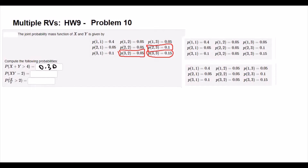The last part is asking probability that x divided by y equals 2. The only cell where x divided by y equals 2 is a specific coordinate, which has probability 0.1. All other x divided by y values are not 2, so the answer is 0.1.